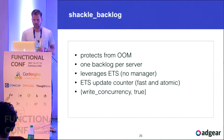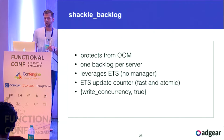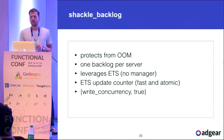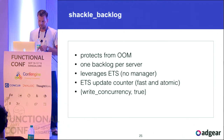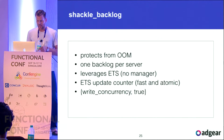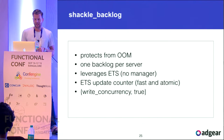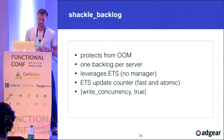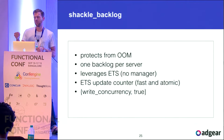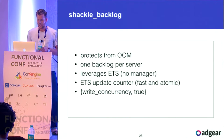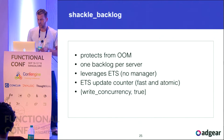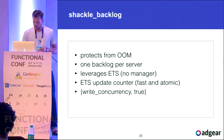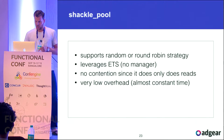The next core part is the backlog, which protects from out-of-memory errors by providing back pressure so message queues don't grow infinitely. We have one backlog per server, leveraging ETS counters. We use update_counter, which is a fast atomic operation — we do a write but get the read for free via the return value. We use the ETS write_concurrency option to further reduce contention.